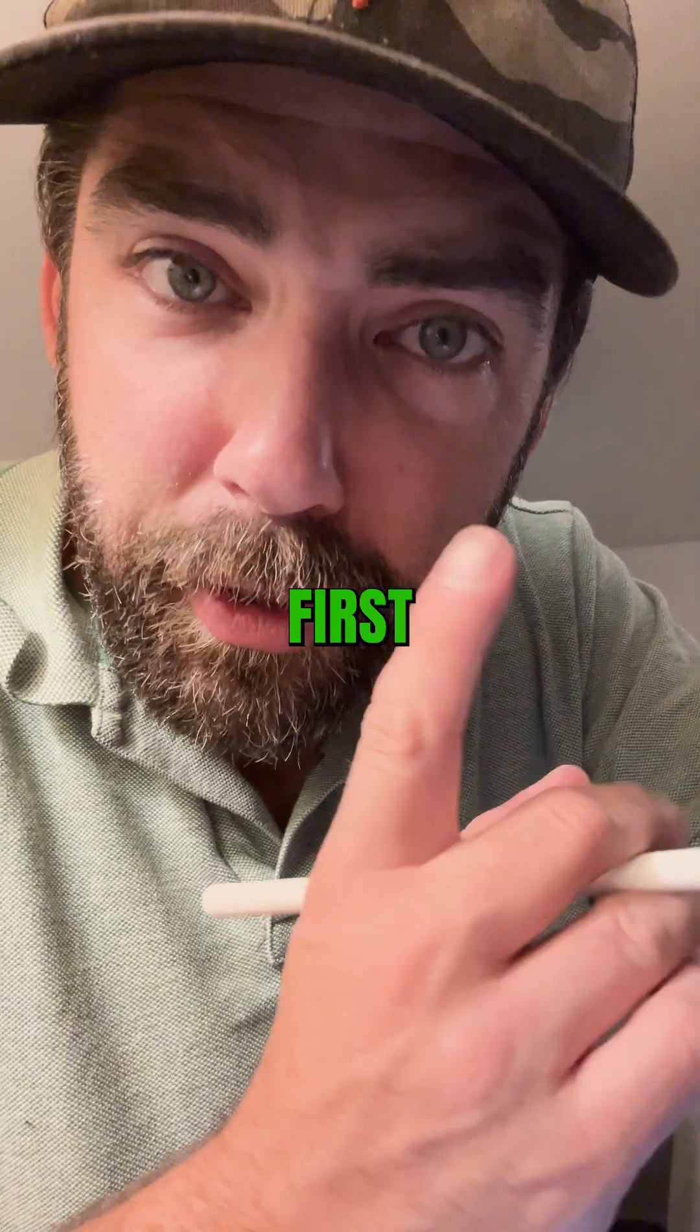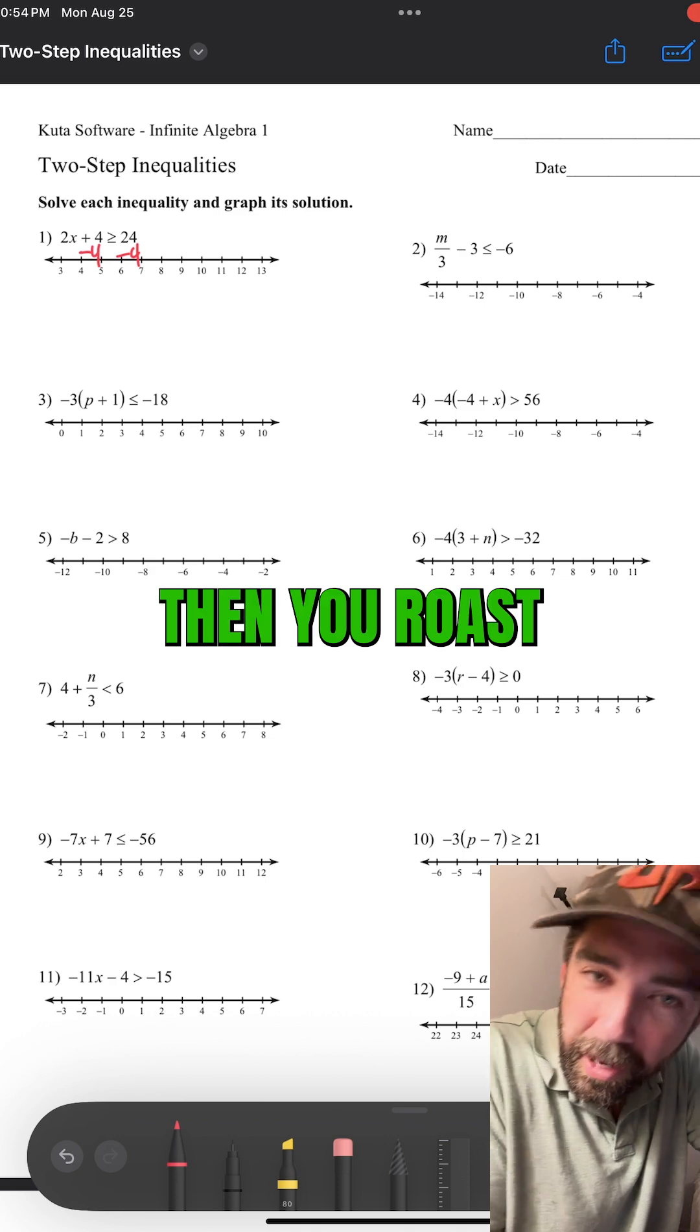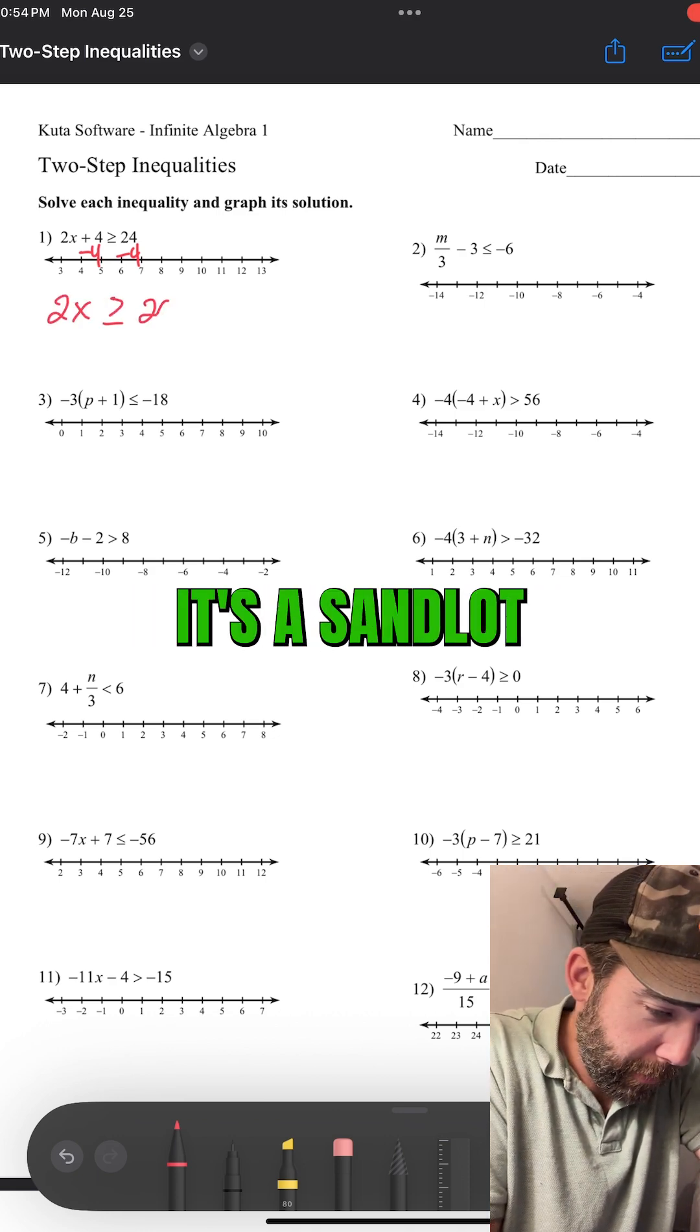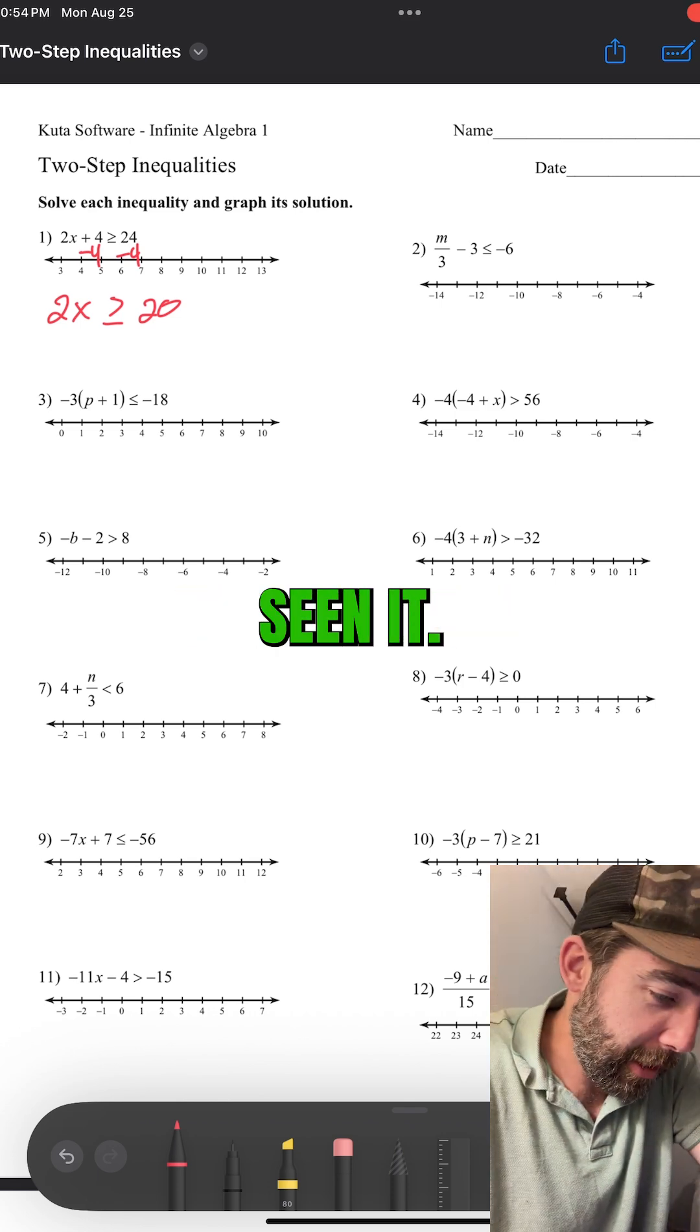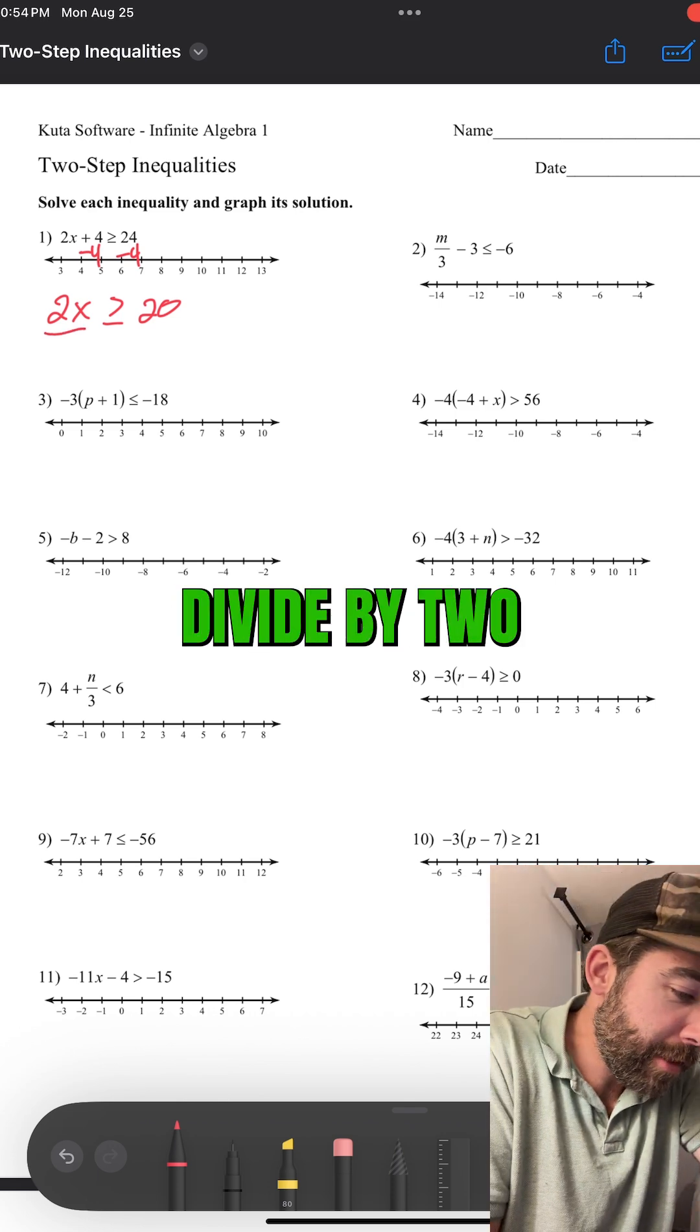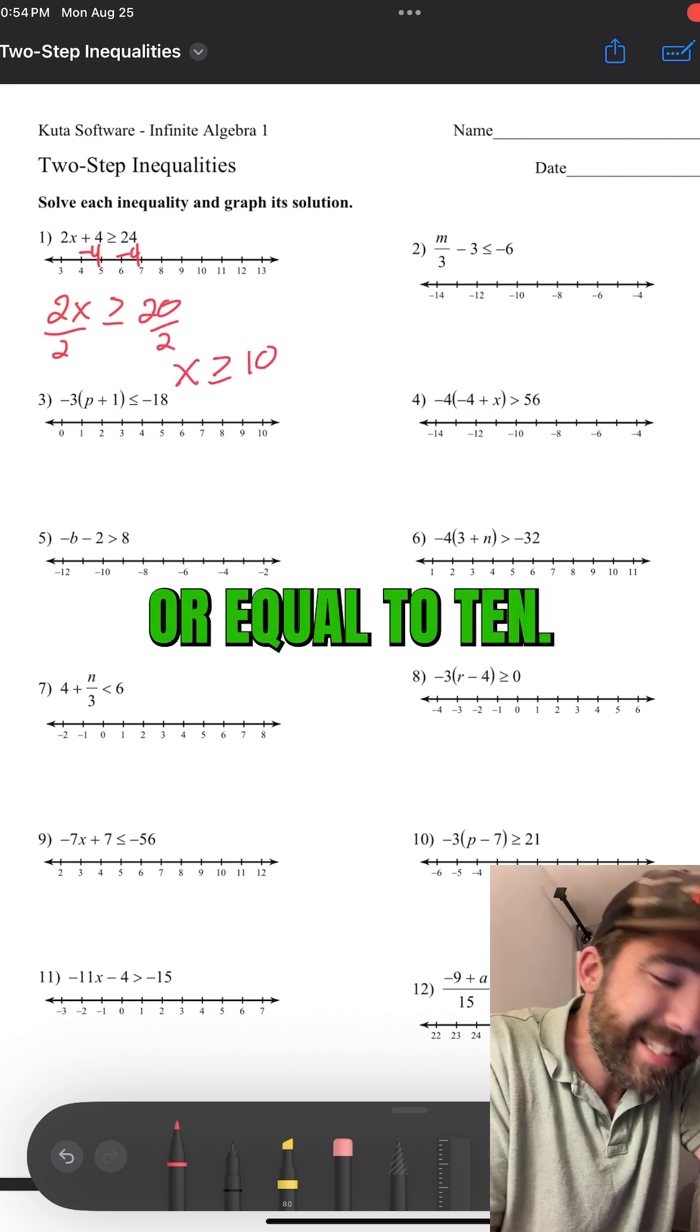So, first, you subtract four. Then, you roast the mallow. When the mallow's flaming, no, I'm just kidding. That's a Sandlot joke. Watch Sandlot if you've not seen it. 2x is greater than or equal to 20. Divide by two. So, x is greater than or equal to 10.